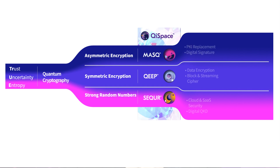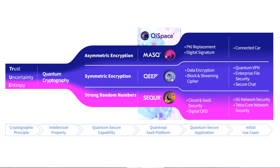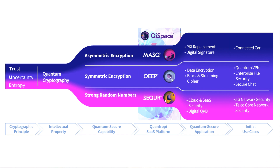Trust is the establishment of a verified digital connection between any two parties. Uncertainty is the use of symmetric encryption to protect data in motion and data at rest. And entropy refers to strong random numbers used as cryptographic keys for encryption algorithms.